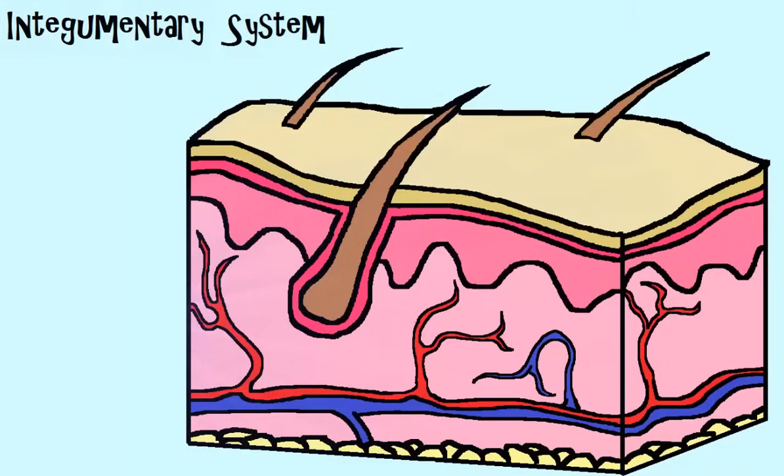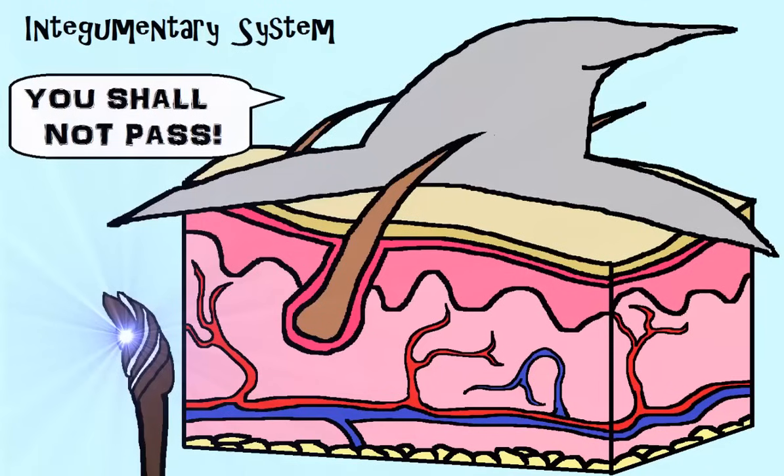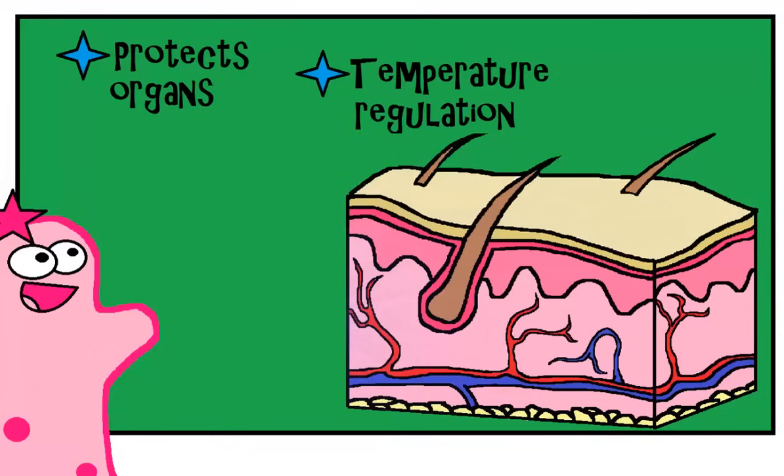Number five, integumentary. Long, fancy word. It's appropriate for your largest organ, which is your skin. Your skin helps protect your organs from outside damage, helps with temperature regulation, and from losing precious water.